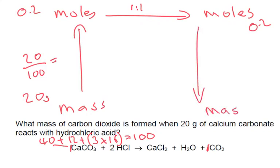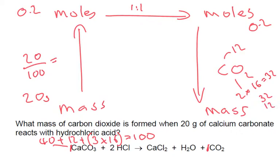We want to now find the mass of carbon dioxide, so we need the molar mass. Carbon dioxide is CO₂ — carbon is 12 and oxygen is 2 times 16, which is 32. So 32 plus 12 gives us 44. Finally, the mass is 0.2 times the molar mass of 44. Putting this in the calculator, we get 8.8 grams.